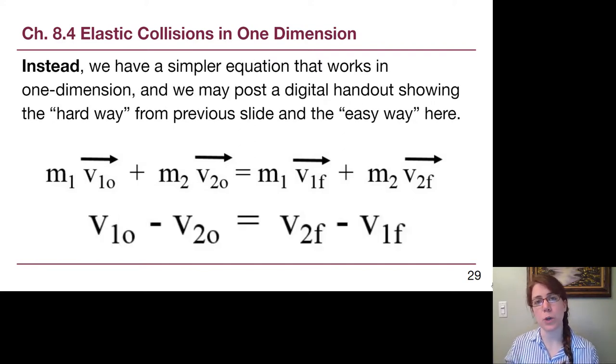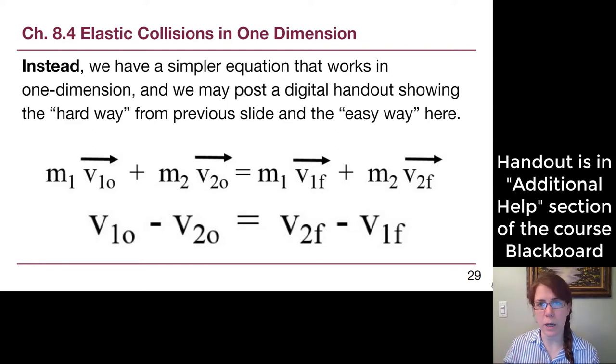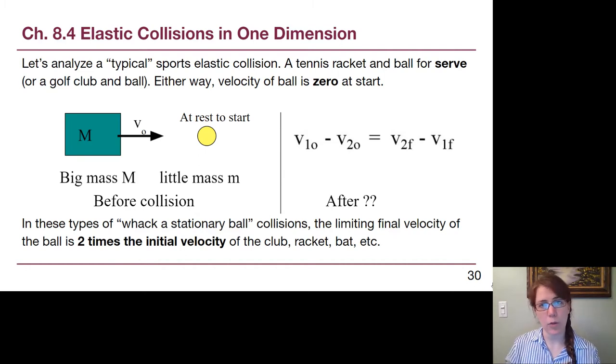Instead, there is a simpler equation that we can use, and we can do problem solving with that is a result that works for one-dimensional collisions. We may or may not have a chance to post the digital handout showing a fully worked problem using the hard way and a fully worked problem showing this easier way. This equation, v1 initial minus v2 initial equals v2 final minus v1 final, is used for elastic collisions.